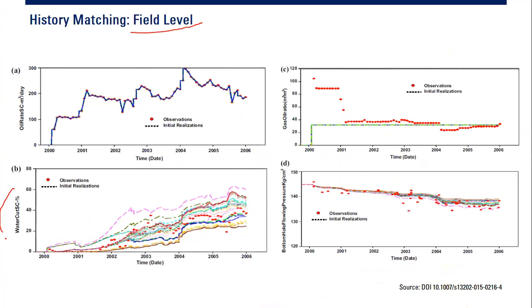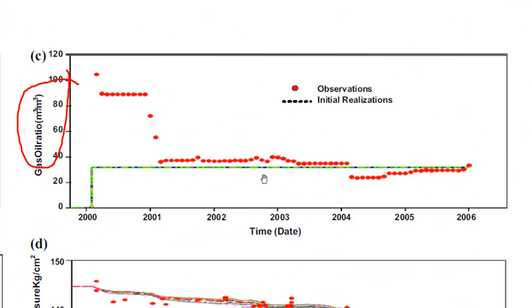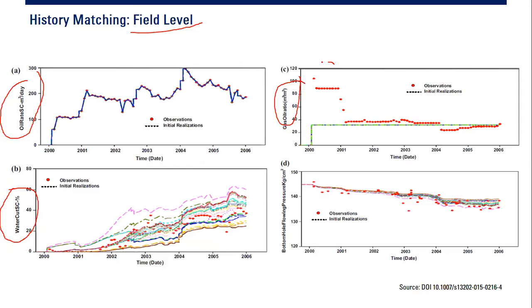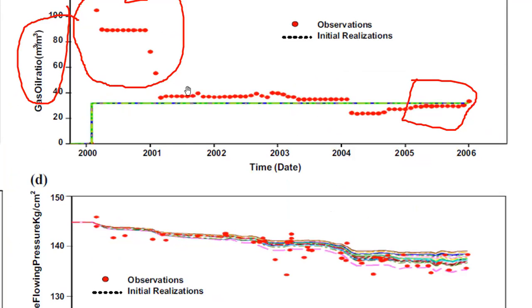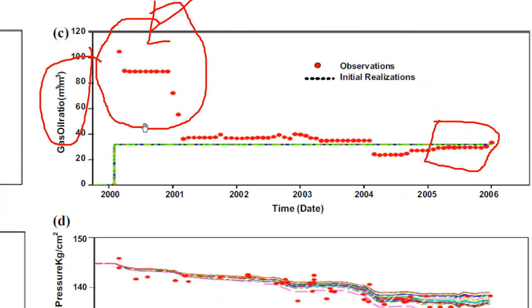This is for water cut, this is for oil rate, and this is the gas-oil ratio. The gas ratio matching is not very good — in the early time it doesn't match, it's very bad matching in that interval. However in the later period the matching is quite good, and you need to understand why there is a mismatch in the early time.